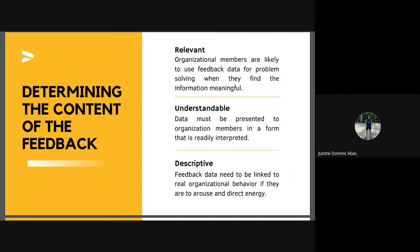Several characteristics of effective feedback data have been described in the literature. They include nine properties. First, relevant: organization members are likely to use feedback data for problem solving when they find the information meaningful; including managers and employees in the initial data collection activities can increase relevance. Second, understandable: data must be presented in a form that is readily interpreted — statistical data, for example, can be made understandable through the use of graphs and charts. Third, descriptive: feedback data need to be linked to real organizational behaviors to arouse and direct energy; the use of examples and detailed illustrations can help employees gain a better feel for the data.